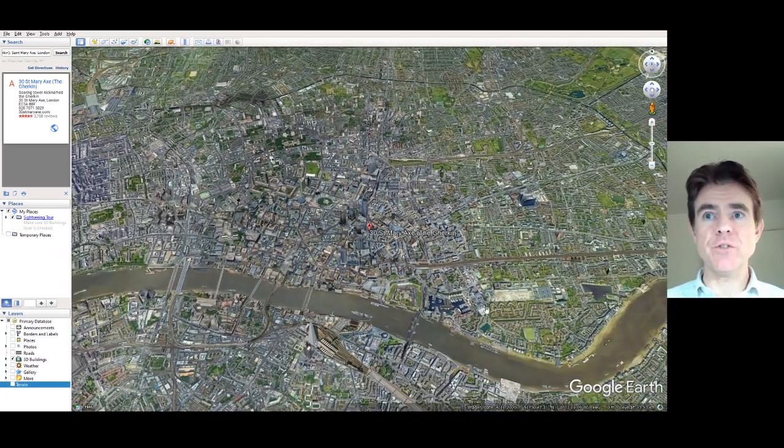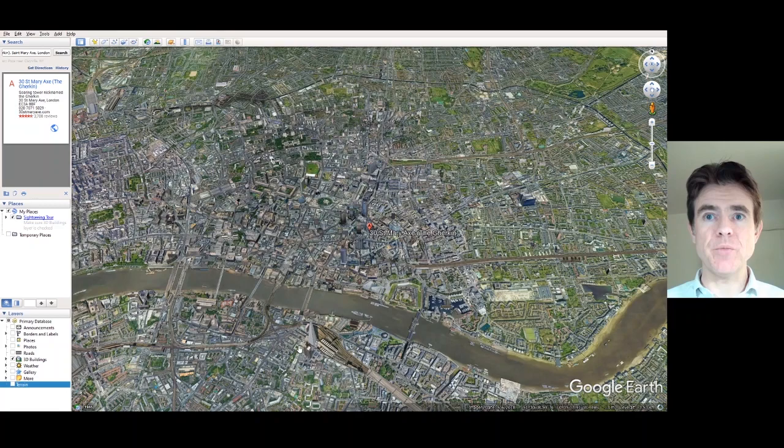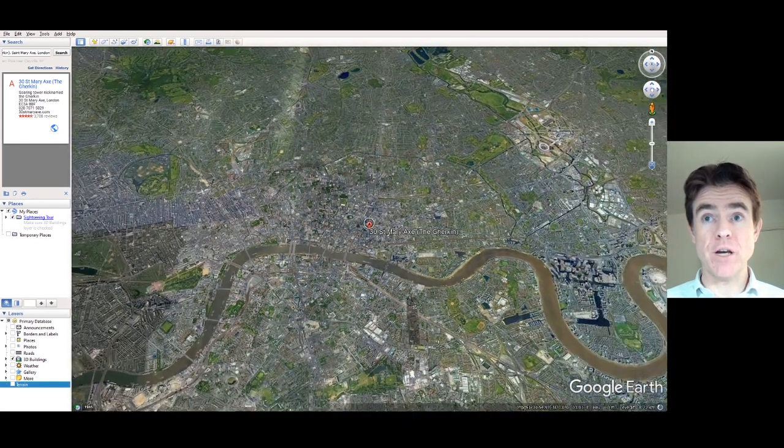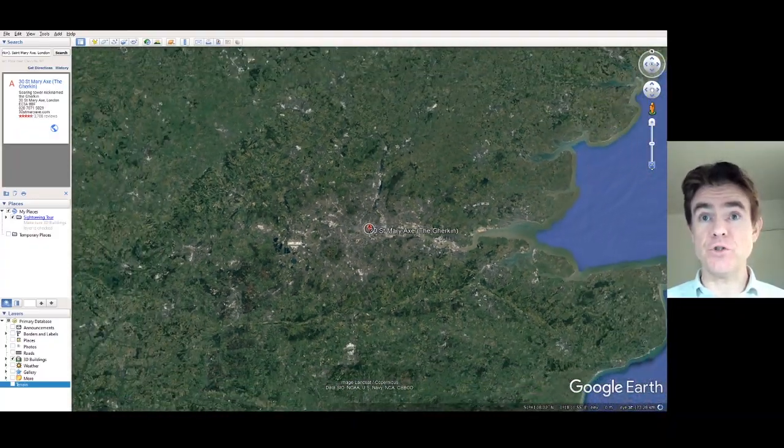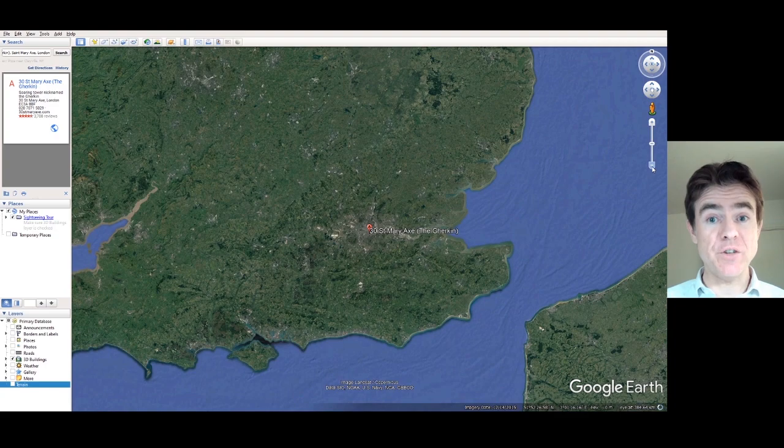What about this? Now we're seeing Tower Bridge at the bottom there, the Shard there. Would we expect to find the electron there? Absolutely not. We've got to keep on going out. We can see most of London there. Still wouldn't see the electron.